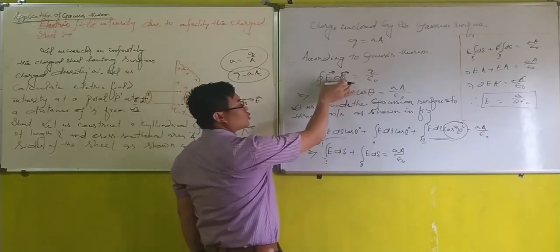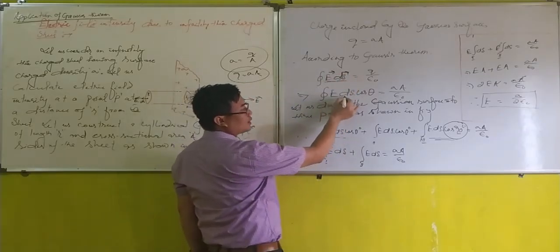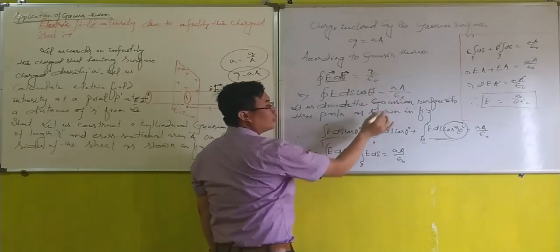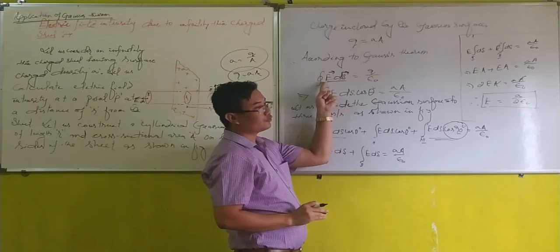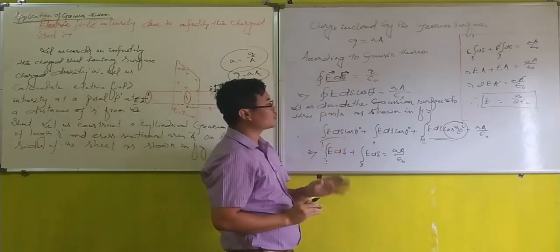That means the dot product can be written as E dS cos theta equals Q over epsilon naught, where theta is the angle between the direction of electric field and the normal to the surface.